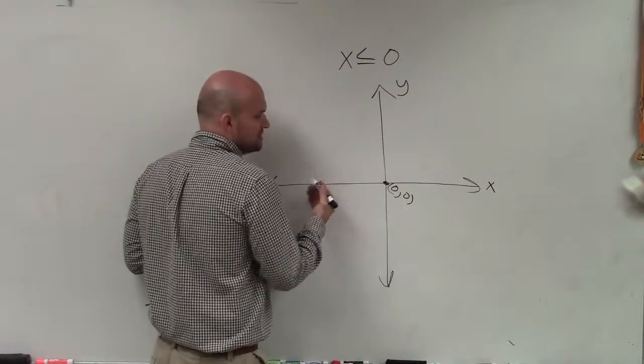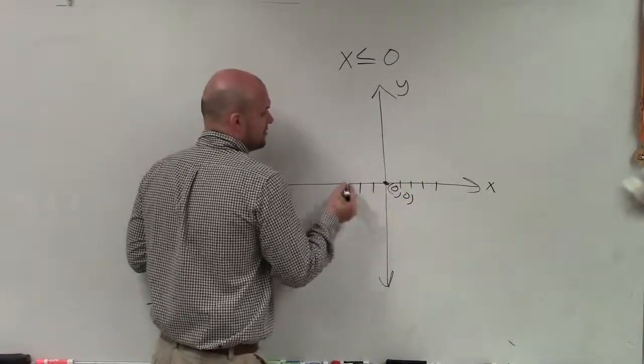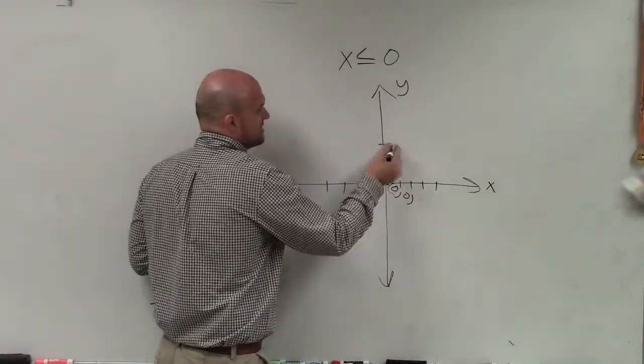Basically, the Cartesian coordinate is kind of two number lines, a horizontal number line and a vertical number line.